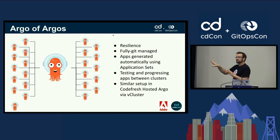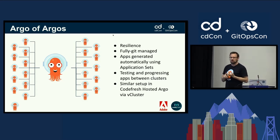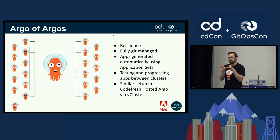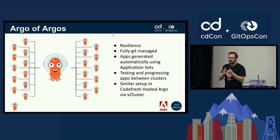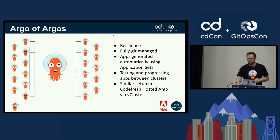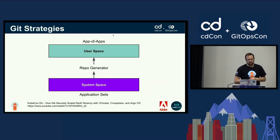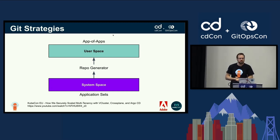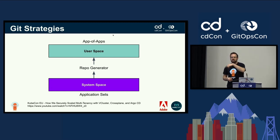This also allows us to do testing and progressing apps between clusters and instances — starting changes in one Argo CD instance and progressing them through staging and production. We can manage regions, with different areas managed by different clusters. At Codefresh, we leverage the enterprise version of Argo CD to maintain community versions in their own V-clusters, so one instance manages thousands of instances. There's a great talk called 'How We Securely Scale Multi-Tenancy with V-Cluster Cross-Planet Argo CD' from KubeCon EU.